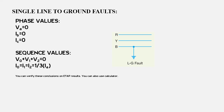So we can say that if there are three phases — phase A, phase B, and phase C — and a single line to ground fault occurs at phase A, then the voltage of phase A, VA, is going to be zero, and the currents in phase B and phase C are going to be zero. Though they are not exactly zero, they are a very minimum value, but in theory we say it is zero.